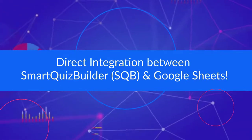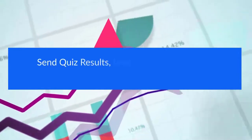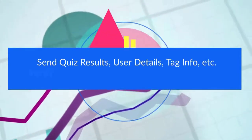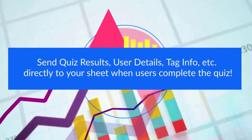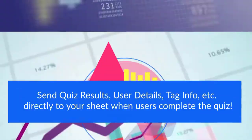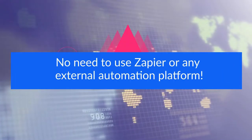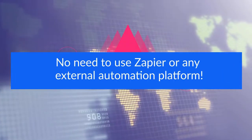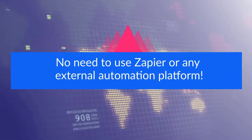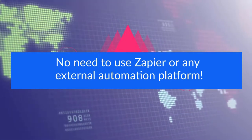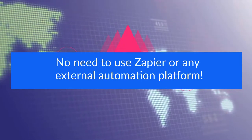What this means is you can now directly send your quiz results, the user details, and everything related to the quiz after they complete it directly to your Google Sheet without requiring an external platform such as Zapier. The integration initial setup is something you have to do once to connect your Google account with Smart Quiz Builder.